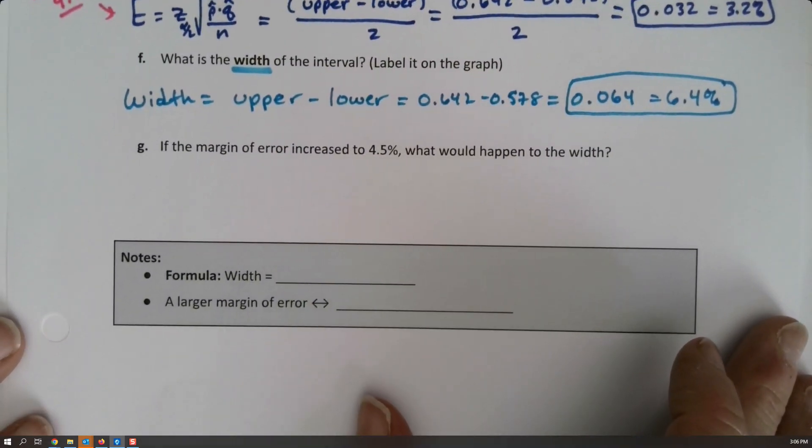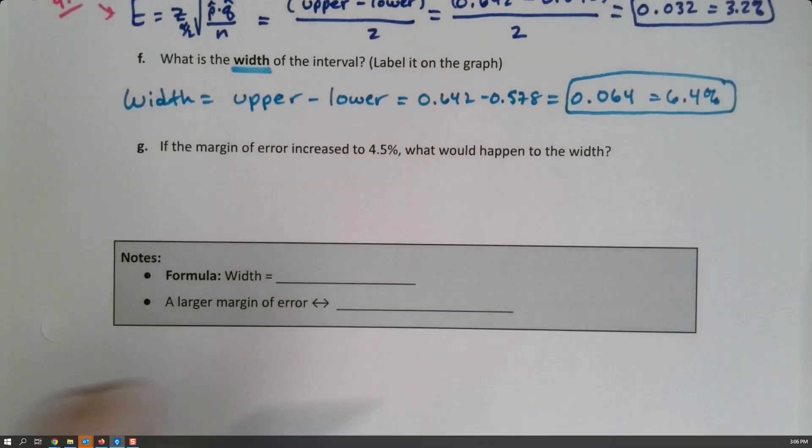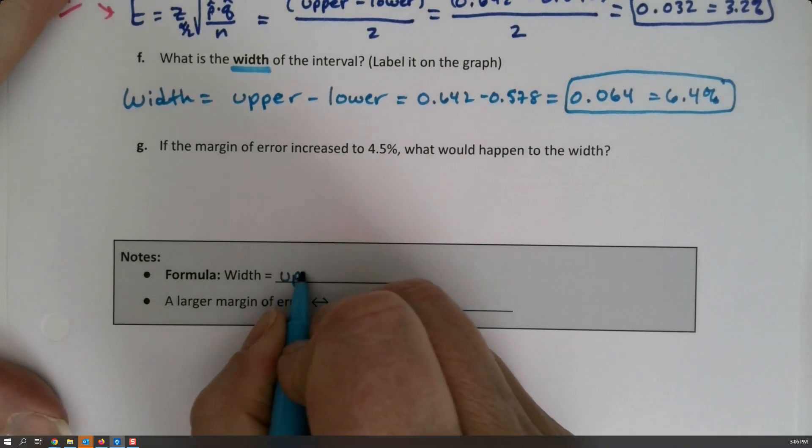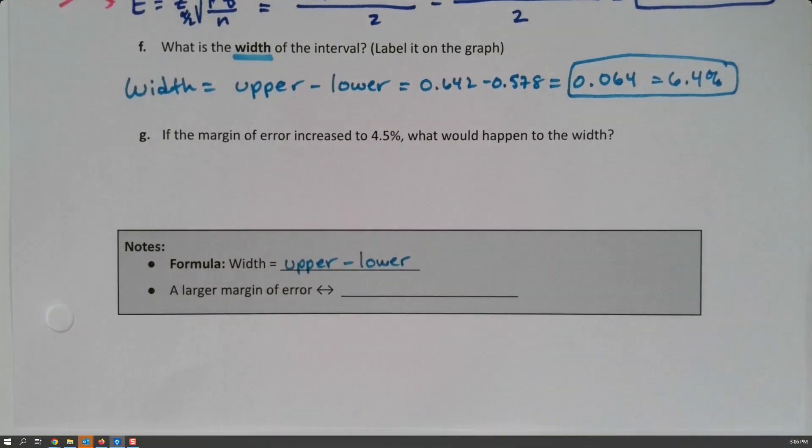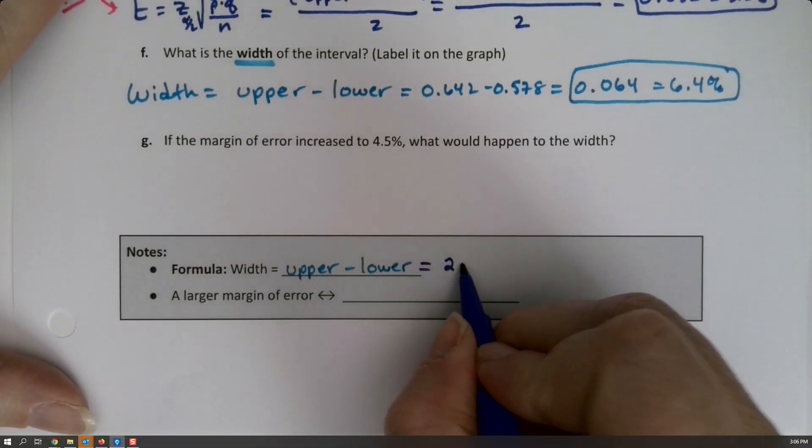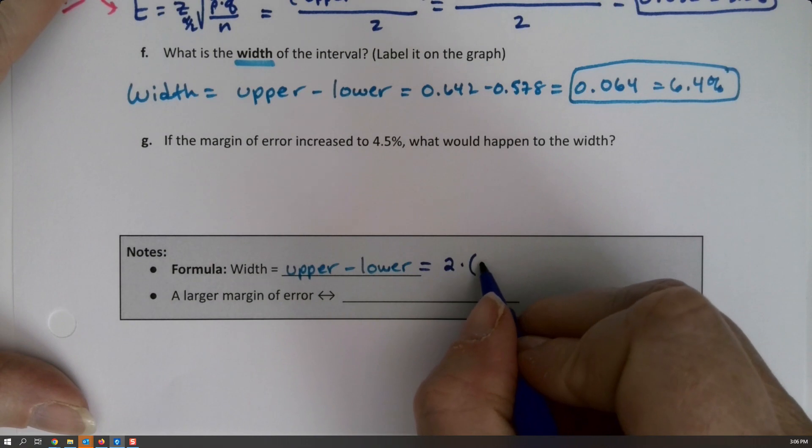All right, so that's an important thing to note. That's down here. The width is the upper minus the lower, or another way to put it is it's two times the margin of error.